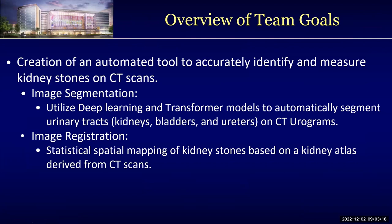By achieving this goal, we have two sub-tasks. The first task is image segmentation. We want to utilize deep learning and transformer models to automatically segment urinary tracts, including the kidneys, bladders, and ureters on CT urograms.